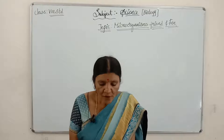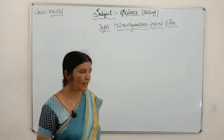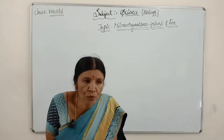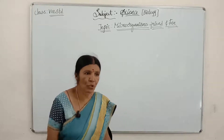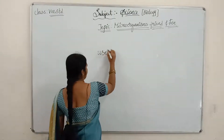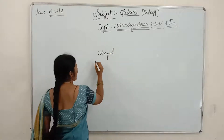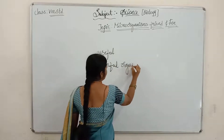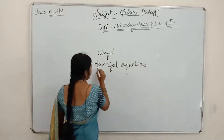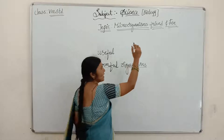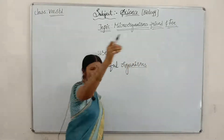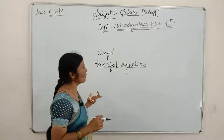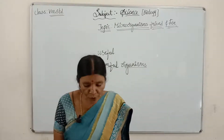Now in today's class we are going to learn more about microorganisms. Microorganisms are not only useful for humans, they are even harmful to human beings. The name of the lesson is foe — foe in the sense they are causing some harm to us, they are our enemy because of this harmful nature. What are these harms of microorganisms to humans? In today's class we are going to discuss.